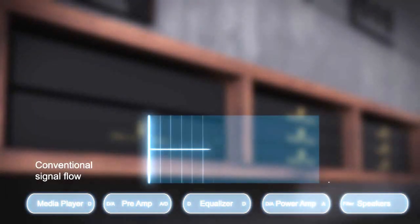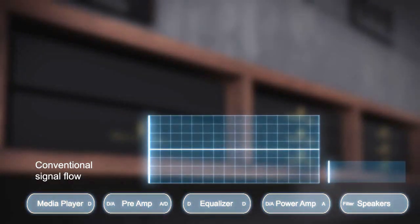Sound complicated? Here's how it works. This chart shows the long, weary signal path of a conventional analog system.